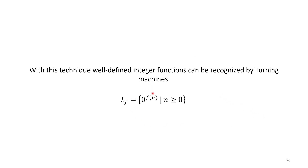With this scaffolding technique — building machines on top of machines — we can show that for any well-defined integer function f(n), this language will be recognized, in fact decided, by a Turing machine. We might call these Turing-computable functions. By the end of this series, we'll have reason to believe that anything computable by any kind of computer could be computed by a Turing machine as well. This has been an exploration of using pseudocode to build increasingly complicated Turing machines — hinting that we can make quite sophisticated ones.